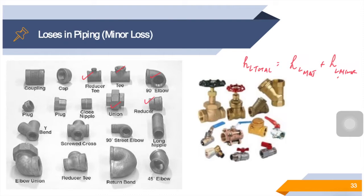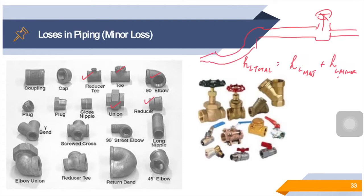In a typical system with long pipes, these losses are minor — if you have a very long piping network with very few valves, the minor losses are not very significant and major losses dominate. However, in some cases minor losses can be greater than major losses — for example, in a system with several turns, elbows, reducers, expanders, and tees, minor losses become the majority. For instance, a partially closed valve may cause the largest head loss in a system, as evidenced by the drop in flow rate.